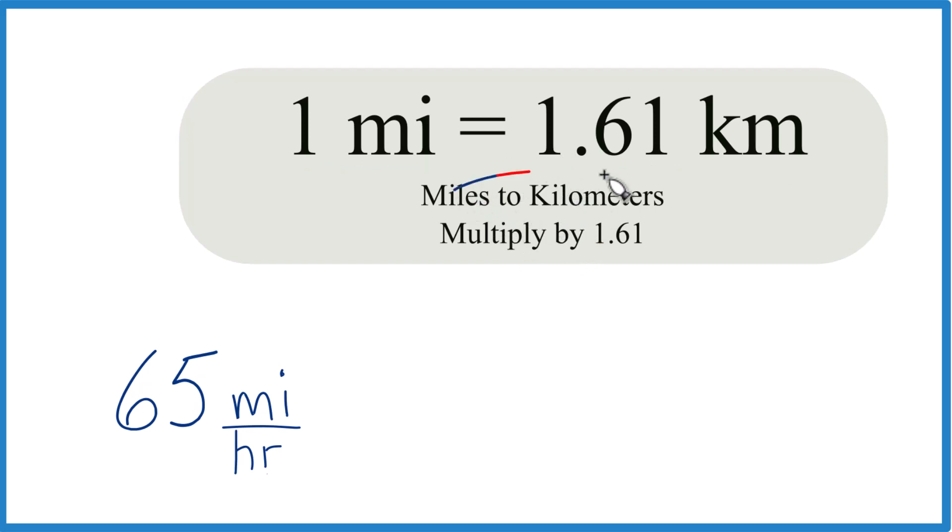So when we go from miles to kilometers, we multiply by 1.61. That's 1.61 kilometers in one mile, so per mile. All we're doing to get from miles per hour to kilometers per hour is multiply by 1.61.